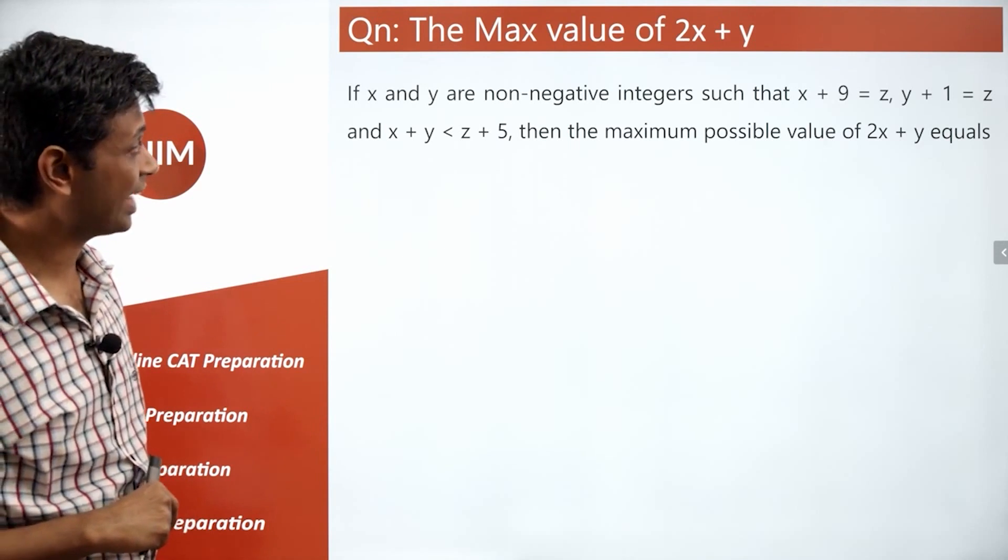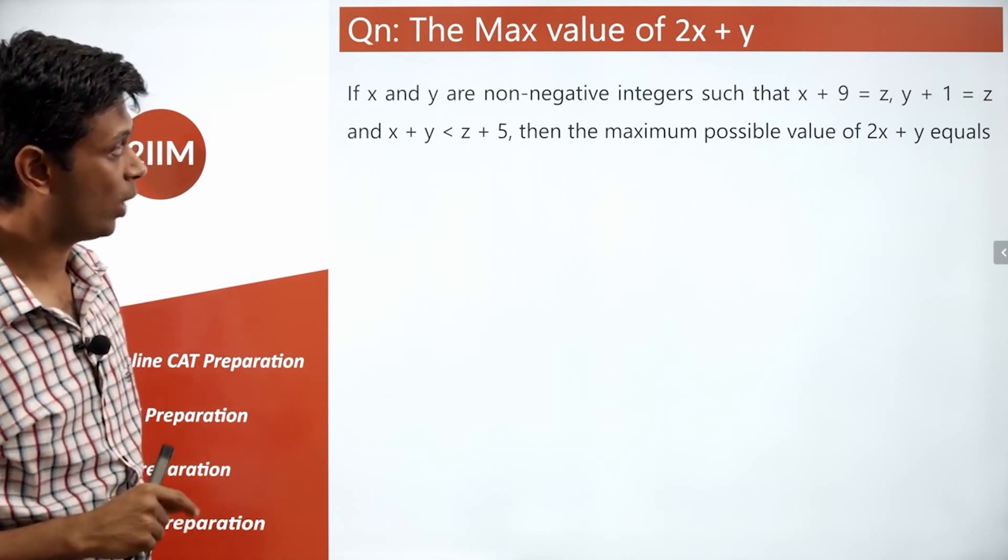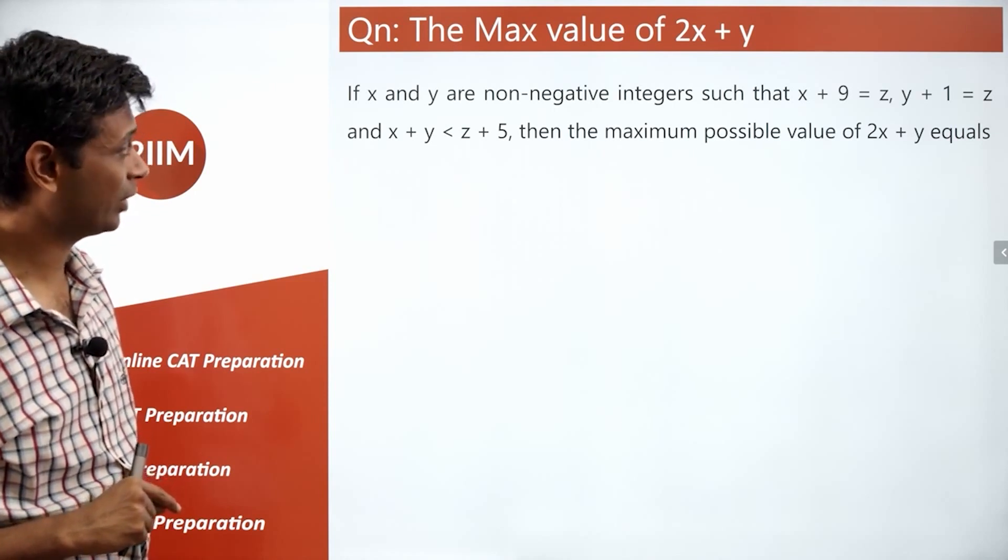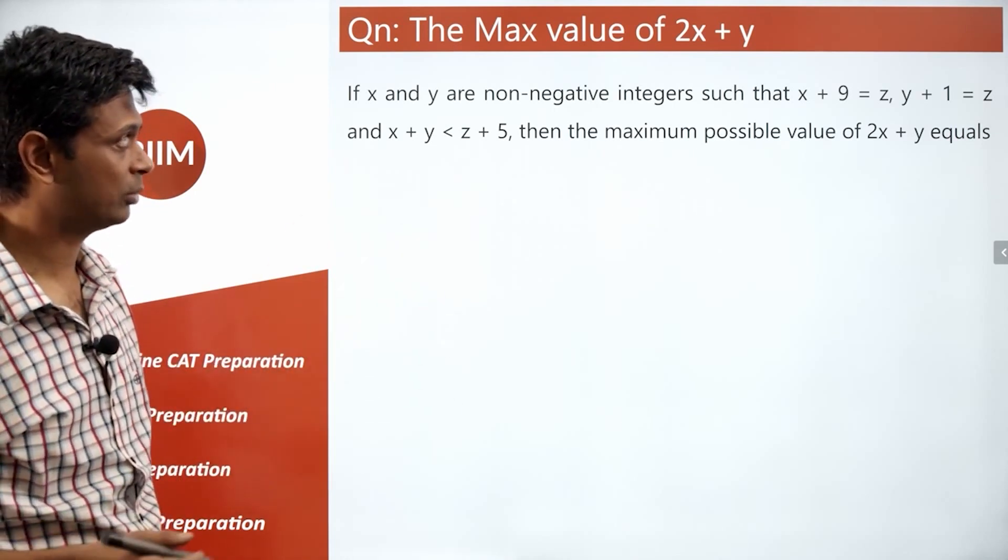If x and y are non-negative integers such that x plus 9 is equal to z, y plus 1 is equal to z, and x plus y less than z plus 5, then the maximum possible value of 2x plus y equals.